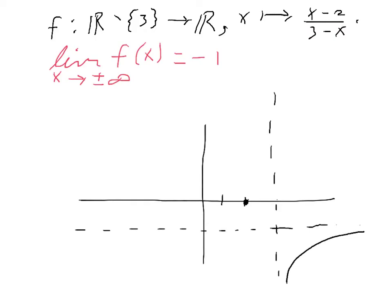Now, if x is bigger than 2 but smaller than 3, then this quantity is positive, and this quantity is also positive. And therefore, it must be going to plus infinity because it's positive.